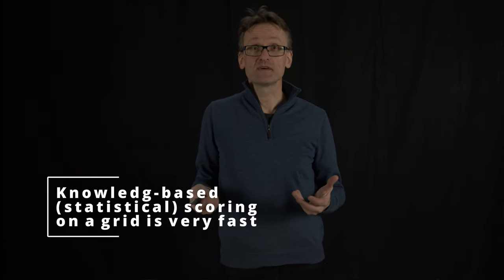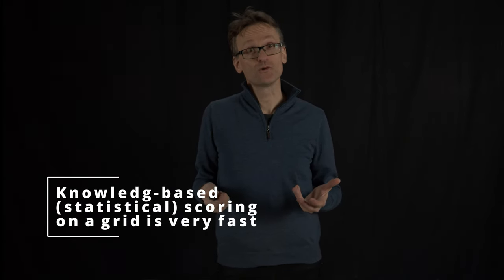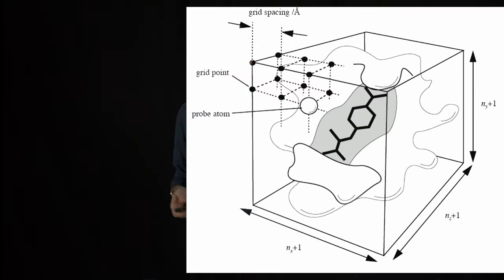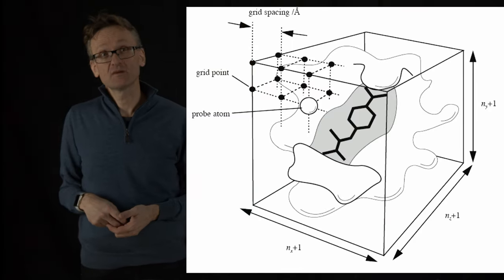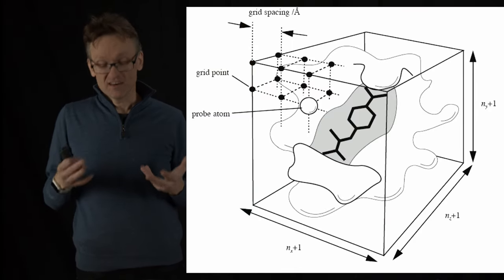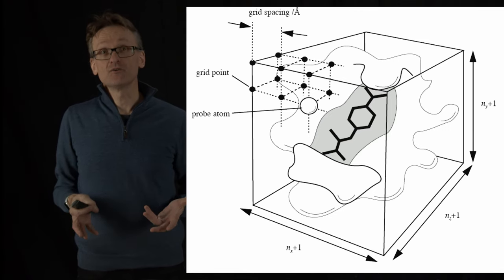So it turns out we can do that knowledge-based statistical scoring on a grid too in a very easy way. Just pick out all those structures in the protein databank, put them on a grid, anything that has a small compound bound.